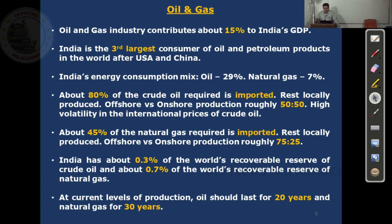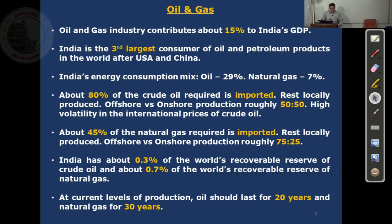Oil and gas industry contributes about 15% to India's GDP — it's a big industry. India is the third largest consumer of oil and petroleum products in the world, after the US and China. India's energy consumption mix: oil is 29%, natural gas is 7%. Try to remember this. About 80% of the crude oil required is imported, the rest locally produced. Offshore versus onshore production is roughly 50-50. There is high volatility in the international prices of crude oil.